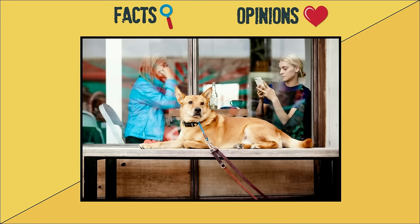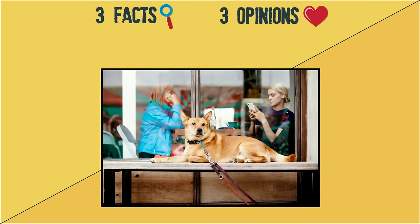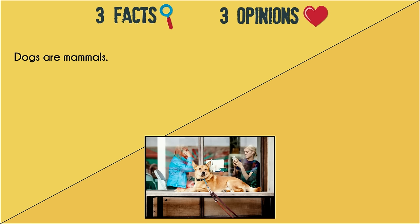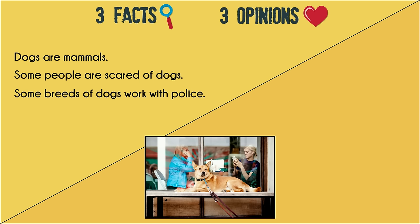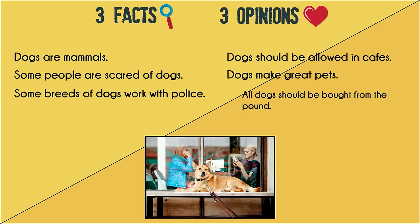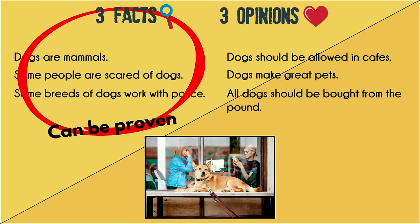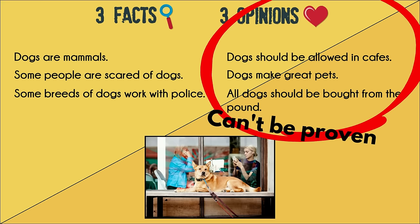So, take a look at this picture. Use it to help you think of three facts and three opinions. Pause here while you think. Here are some facts I came up with: dogs are mammals; some people are scared of dogs; some breeds of dogs work with police. Here are some opinions I came up with: dogs should be allowed in cafes; dogs make great pets; all dogs should be bought from the pound. All of my facts can be proven. My opinions can't be proven. How did you go? What facts and opinions did you come up with?